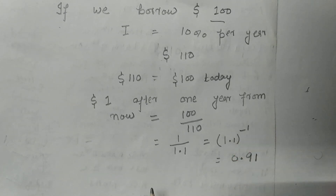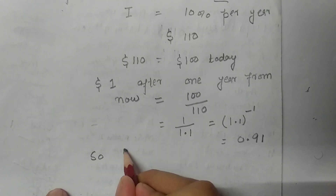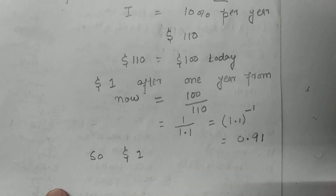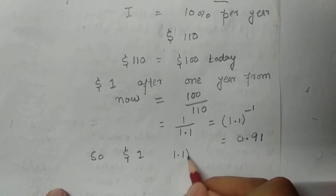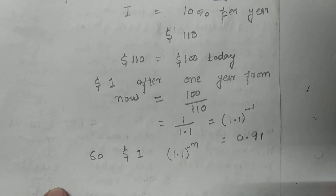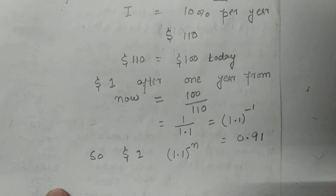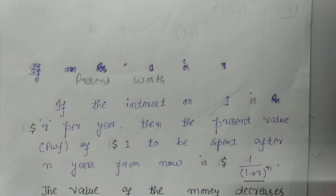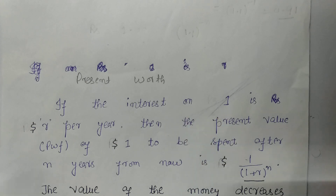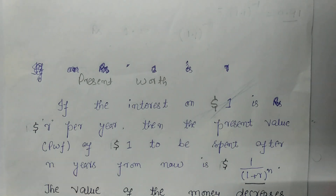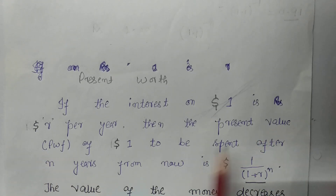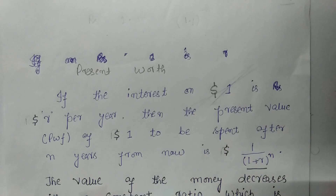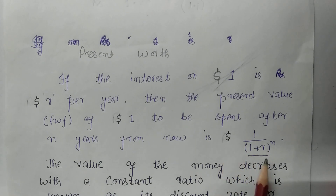It means that one dollar after one year from now will be equal to 0.91 dollars, or 1.1 raised to power minus 1. So one dollar n years from now is equivalent to 1.1 raised to the power minus n dollars at the interest rate of 10%. This is called change in the value of money. Now for present value or present worth: if the interest on one dollar is r dollars per year, then the present worth factor PWF of 1 dollar to be spent after n years from now is equal to 1 upon (1 plus r) raised to power n.